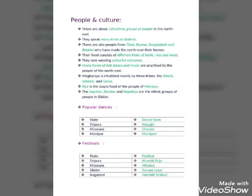The popular dance forms: in Tripura, the dance form is Hojagiri; in Mizoram, it is Cheraw; and in Manipur, the famous Manipuri dance. These are the popular dance forms of these three states. Regarding festivals: in Tripura, the famous festival is Kharchi Puja; in Mizoram, it is Mimkut; in Sikkim, it is Sonam Losar; and in Nagaland, the very famous festival is the Hornbill Festival.